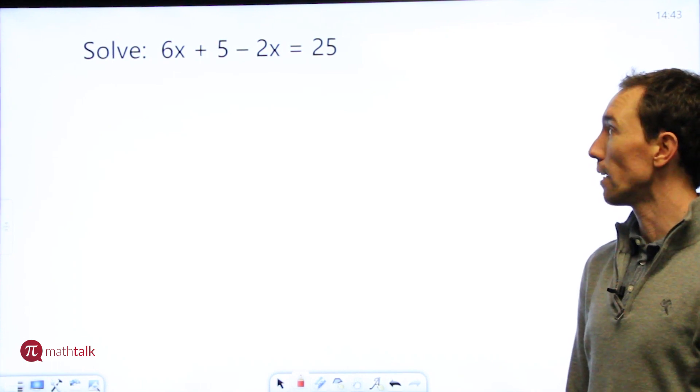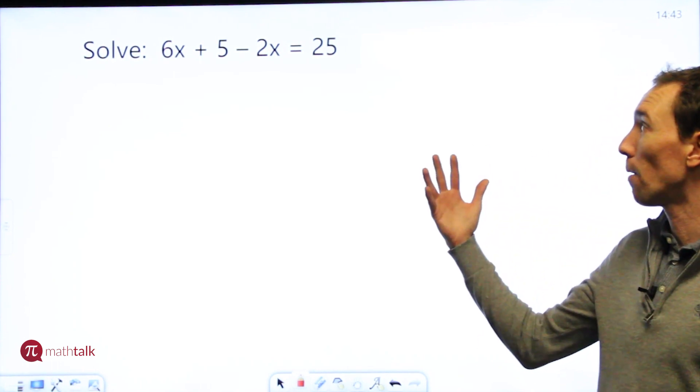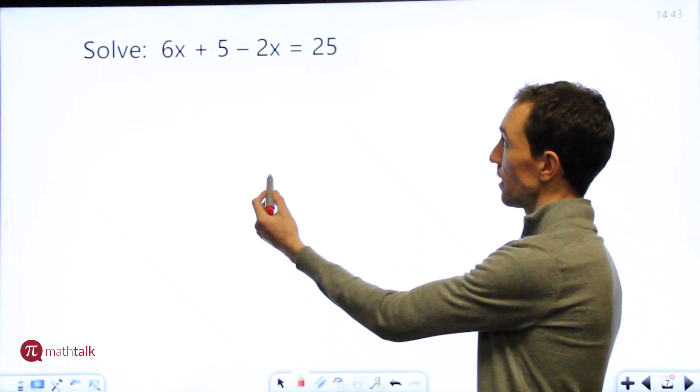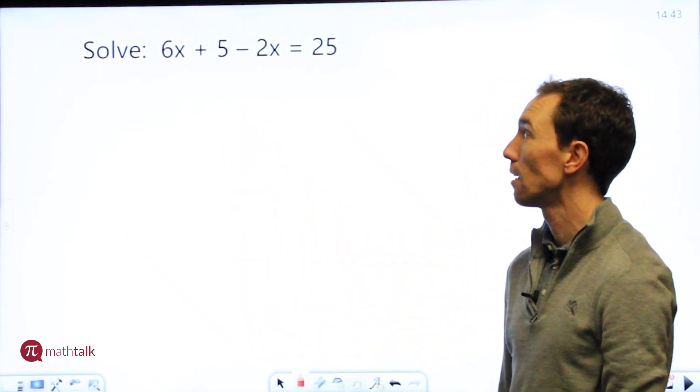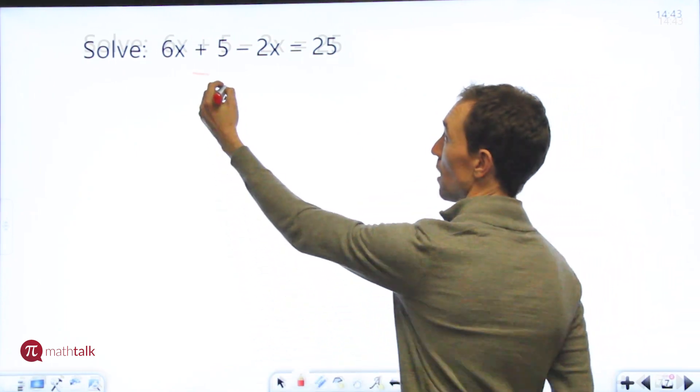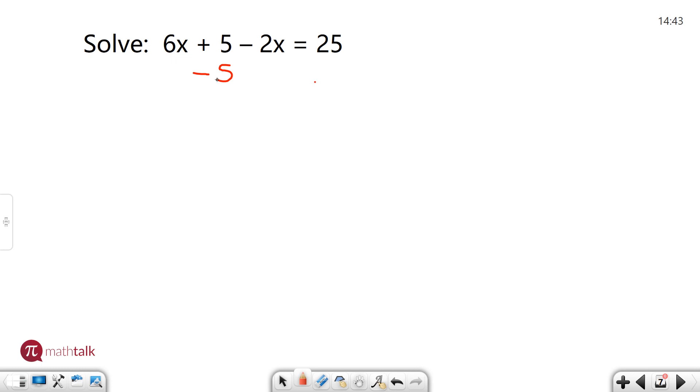I'm going to bring all my x's to one side and all my numbers to the other. I see on the left side that I have two values with x's and I have a number. I'm going to bring that number to the other side of the equation by doing the opposite operation.